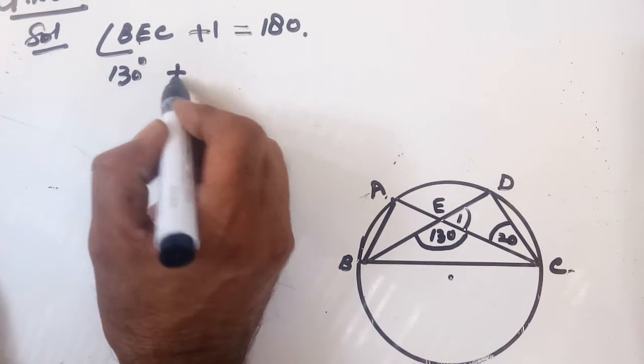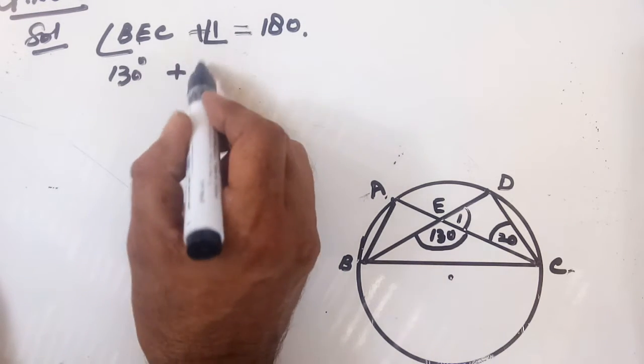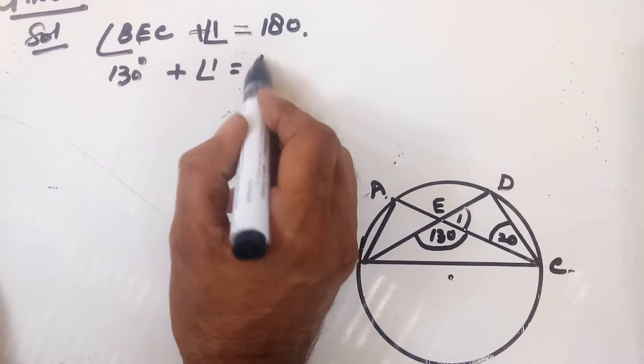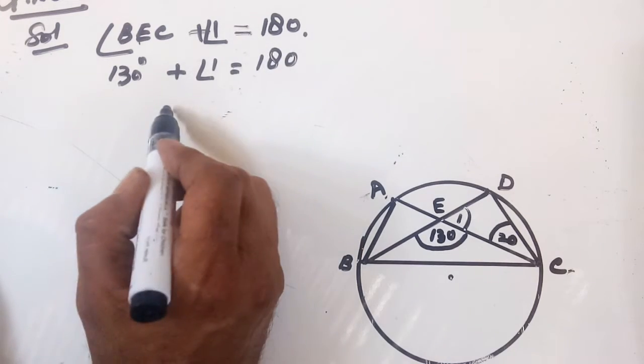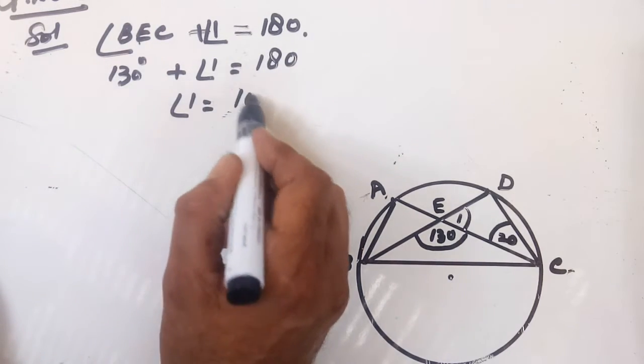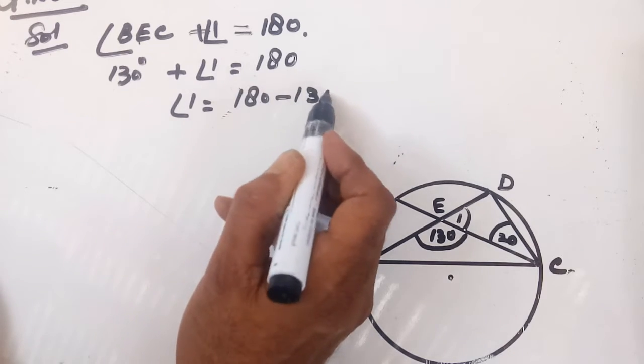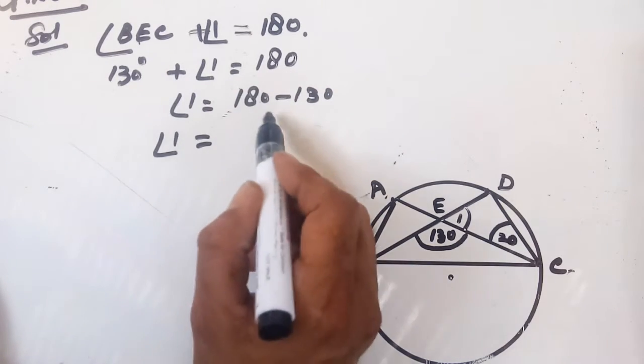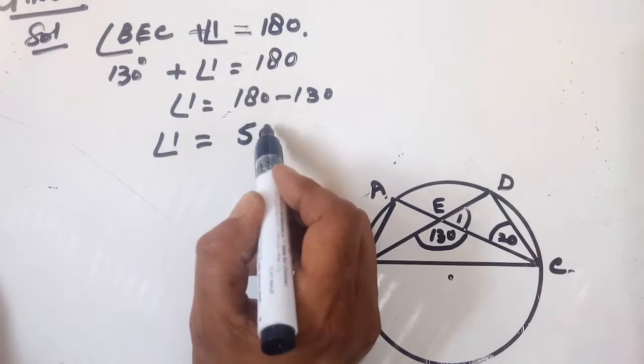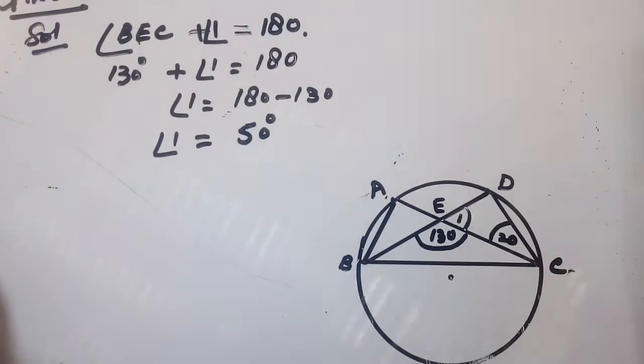So angle BEC plus angle 1 equals 180 degrees. Therefore, angle 1 is 180 minus 130, which equals 50 degrees.